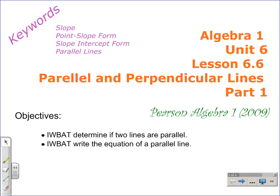The key words in this lesson are going to be slope — we learned about that in Lesson 6-1, and we've been using it pretty often in this unit on linear equations. Point-slope form is another key word. In this lesson, we're going to be using the variable m to represent slope, most often in the slope-intercept form and in the point-slope form, which we talked about in Lesson 6.5. The point-slope form is y minus y sub 1 is equal to m times the quantity x minus x sub 1.